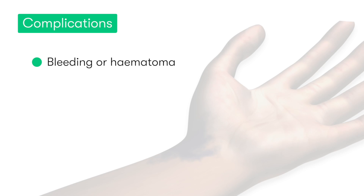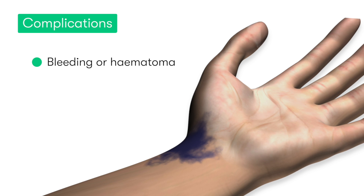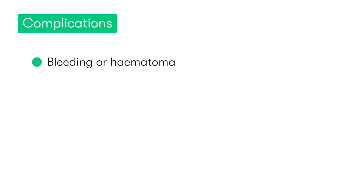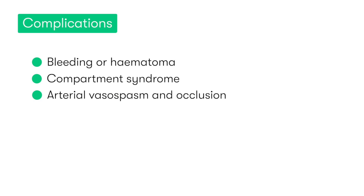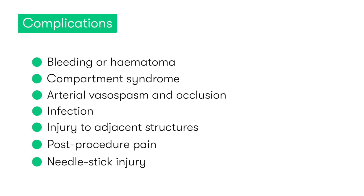In terms of complications, significant bleeding or a local haematoma may occur, and this is usually indicative that a laceration of the artery has happened. Large or expanding haematomas carry the risk of causing compression of local structures, and potentially causing compartment syndrome. Other complications to be aware of include arterial vasospasm or occlusion, infection of the puncture site, injury to adjacent structures such as nerves or tendons, and the patient may experience significant post-procedure pain. Lastly, there is the risk that the person carrying out the procedure may sustain a needle stick injury, so make sure you take all necessary precautions at all times.